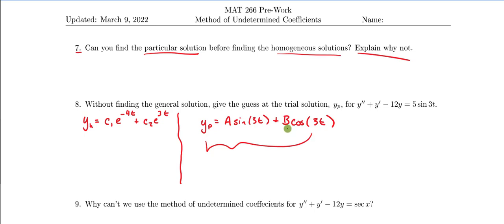In this case you could take the first derivative of this trial solution, the second derivative, plug them into the original non-homogeneous ODE, and then use the method of undetermined coefficients to solve for A and B. Once you have those, you have your particular solution, which you could then combine with the solution to the homogeneous equation to give your general solution to the original ODE.